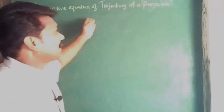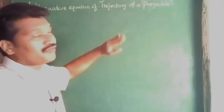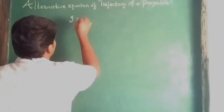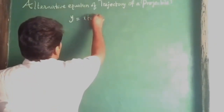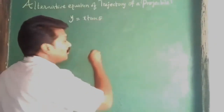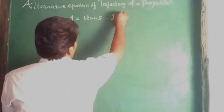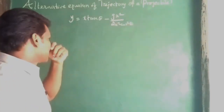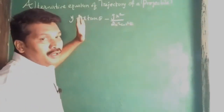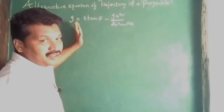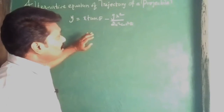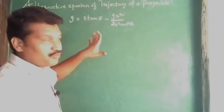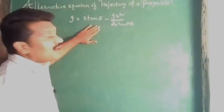Hi friends, the equation of the trajectory of a projectile is y equal to x·tan θ minus g·x² by 2u²·cos²θ. This is a parabolic equation of the form ax plus b squared. The path or trajectory of the projectile is a parabola.